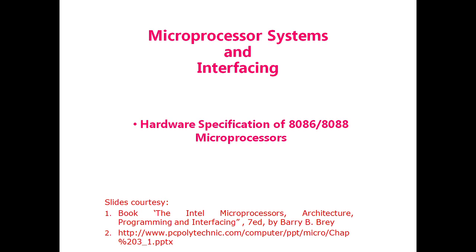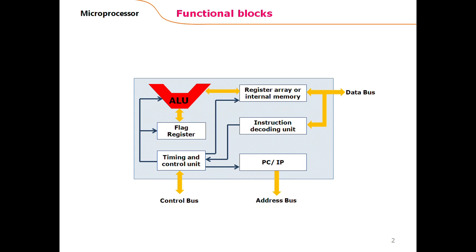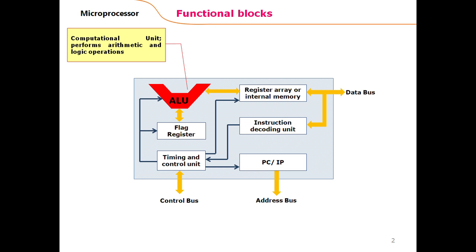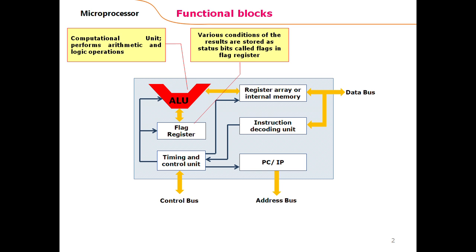The slides included in this lecture have been edited from two sources. An Intel microprocessor has a number of functional blocks. A typical microprocessor includes these functional blocks. The first block is a computational unit — this unit performs arithmetic and logic operations. As the name specifies, it is an Arithmetic and Logic Unit, so this unit is responsible for performing arithmetic and logic instructions on data.